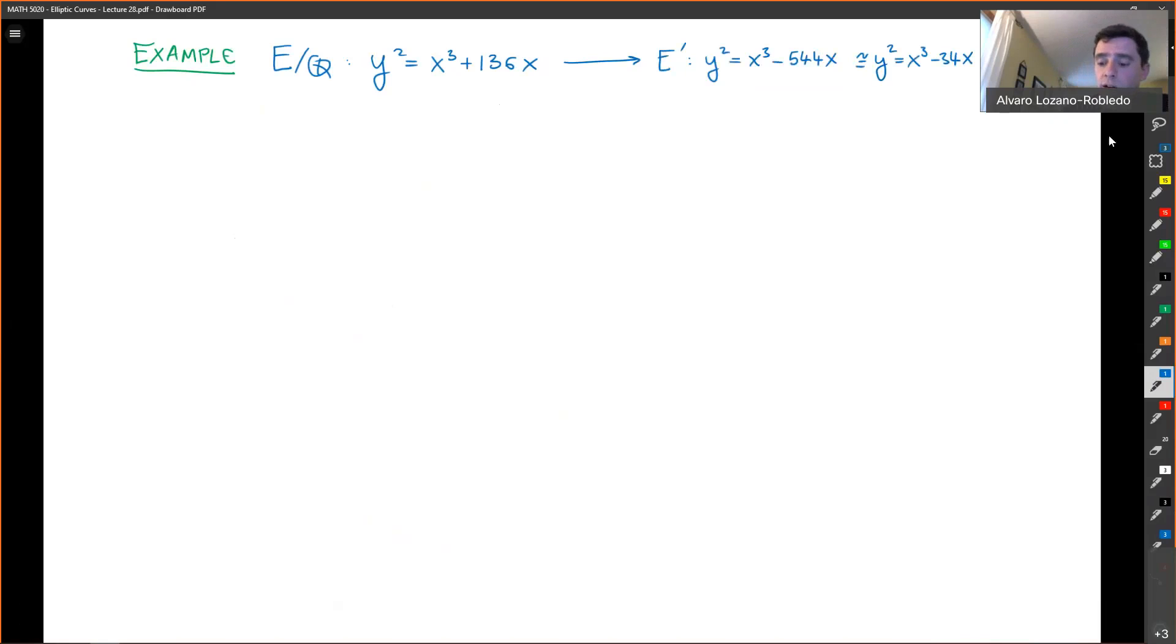Okay, so what we're going to do is for every d which is in this Qs2, there's going to be this diagram. We have E and we have a map phi to E prime. We also have the corresponding phi hat going on the other direction. And then there's going to be homogeneous spaces CD that map through psi D down to E, and there are maps from homogeneous spaces CD prime down to E prime. The bad primes are the infinity primes, just infinity, there is 2 and there is 17.